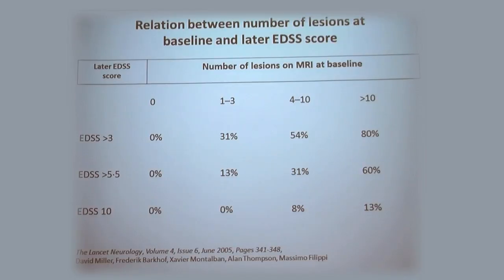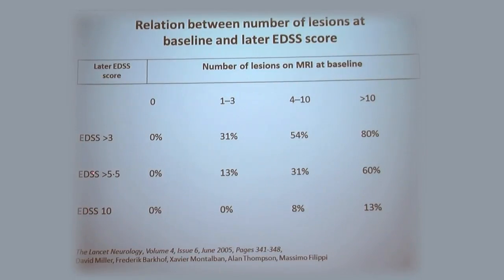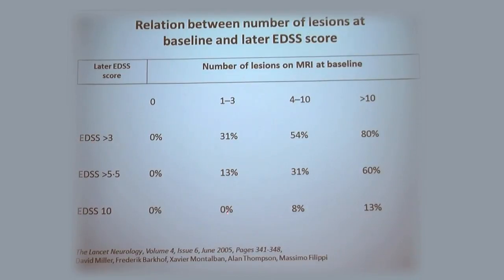This is a different way of looking at it: number of lesions on the MRI at the beginning, and then years later based upon EDSS — a score of symptoms where the higher your score, the more symptoms you have. If someone had zero lesions at baseline, nobody progressed. With one to three lesions, 31% would progress a little bit, but nobody would progress to an EDSS of 10. But if somebody had more than 10 lesions, the probability of progressing to higher disability stages was much higher. It's another way of understanding how MRI is useful in diagnosing, managing, and deciding on treatments for MS.